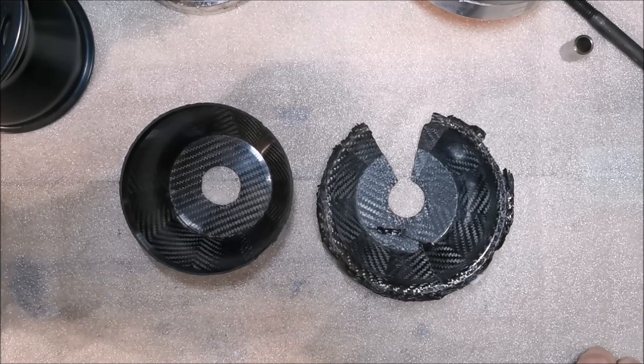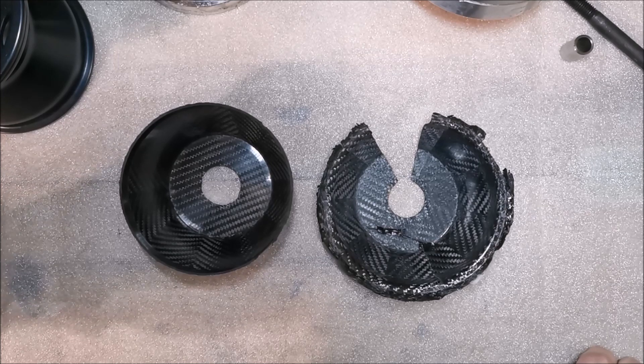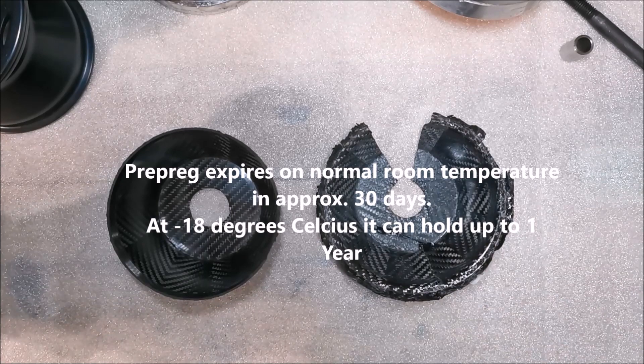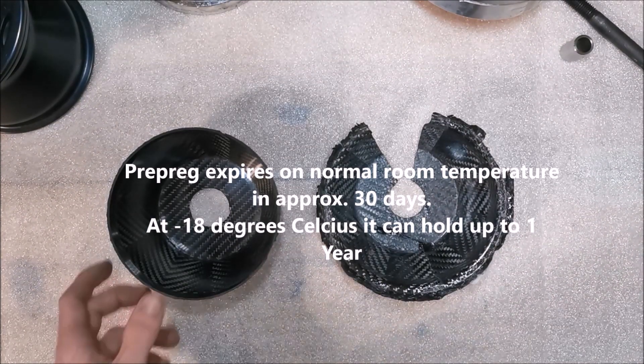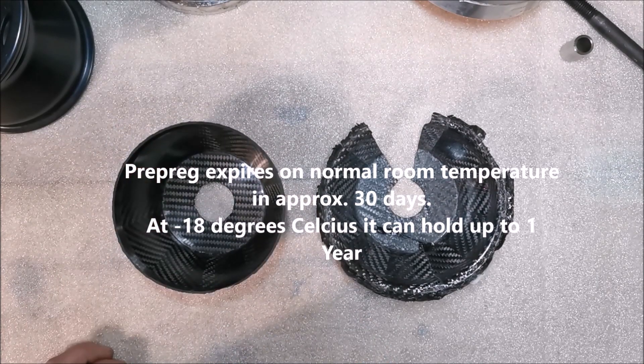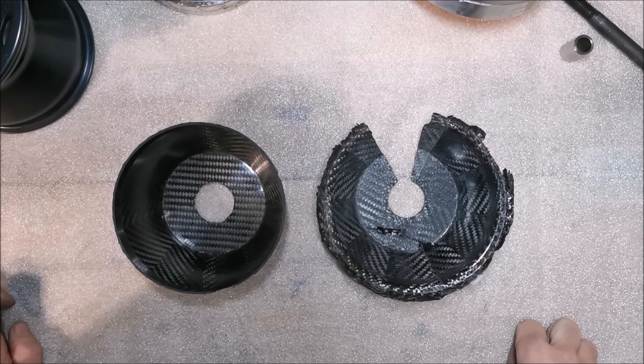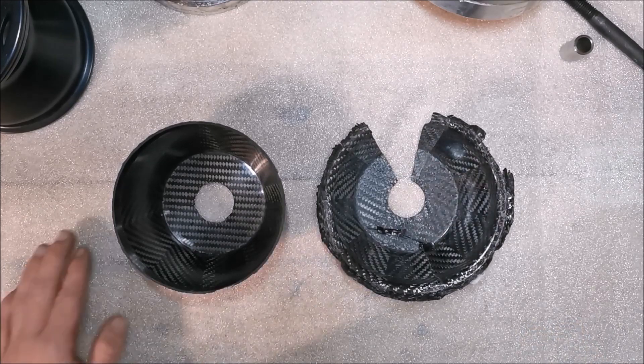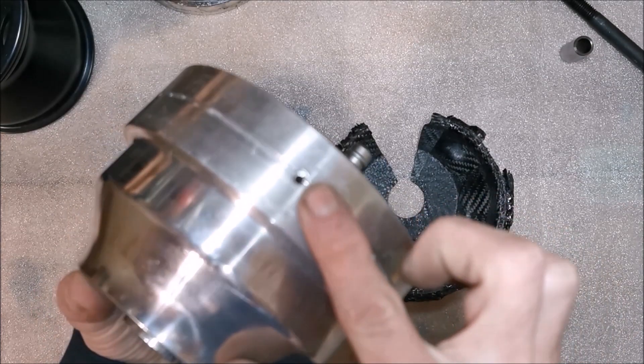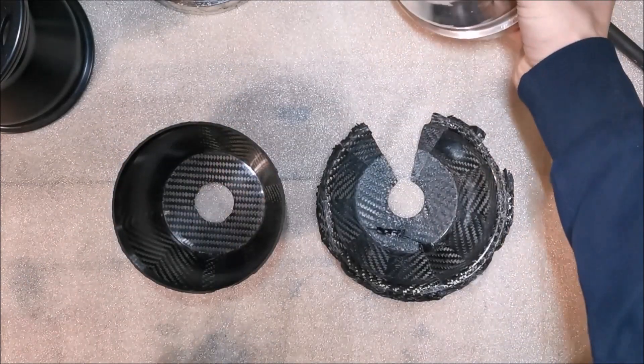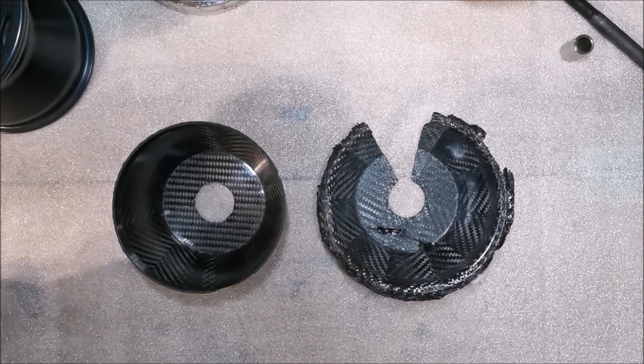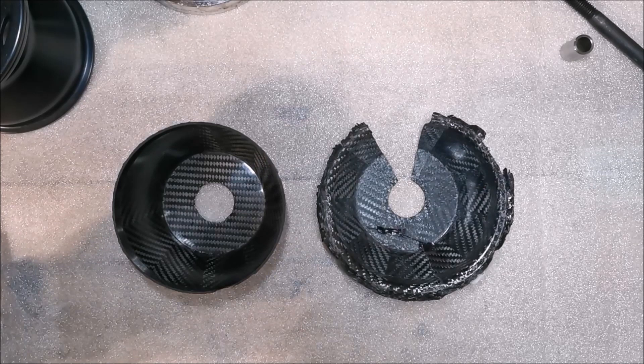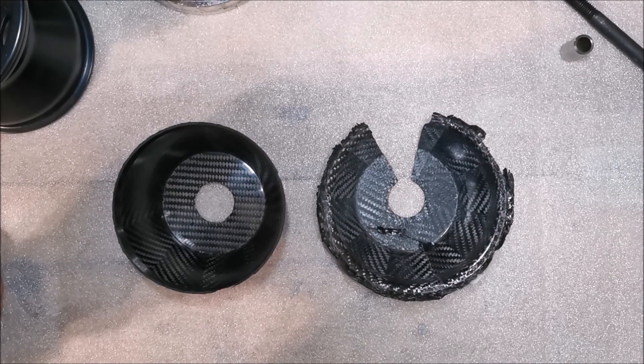The problem was I used prepreg which was basically too old. I used older prepreg. I had it laying around and I wanted to use it before it expires. But it was already expired. So that was one of the reasons. Second of the reasons was, the mold wasn't airtight. I didn't check it right. Put it in the oven. And when I put it out, the vacuum was gone. And also, these holes were full with resin, which was the reason why the vacuum was gone. I basically put the carbon fiber too close to the holes. As it got heated up, the resin went into it and vacuum was gone.